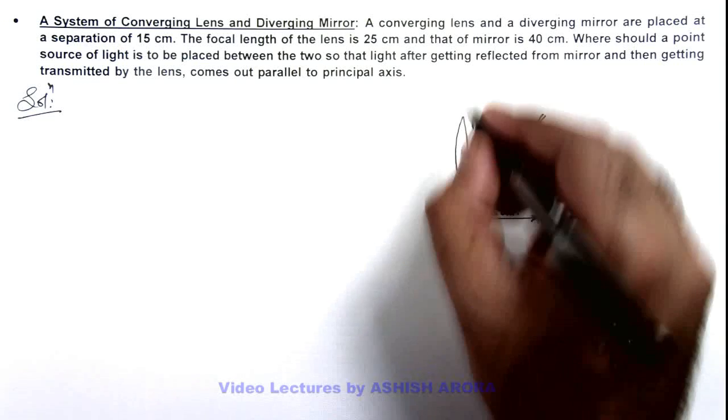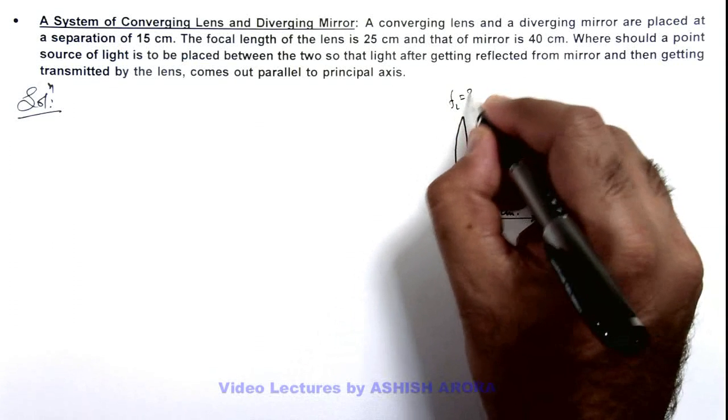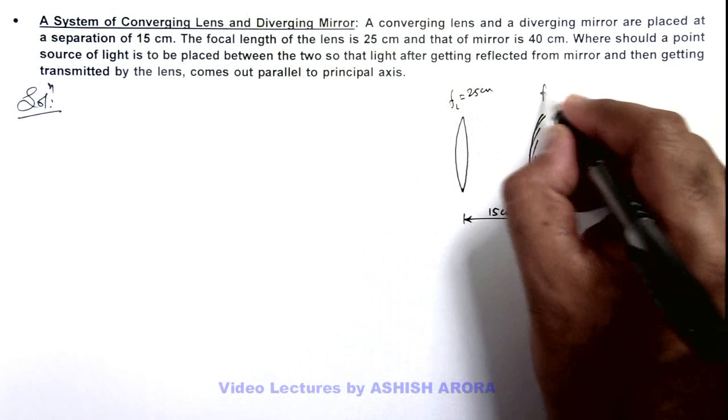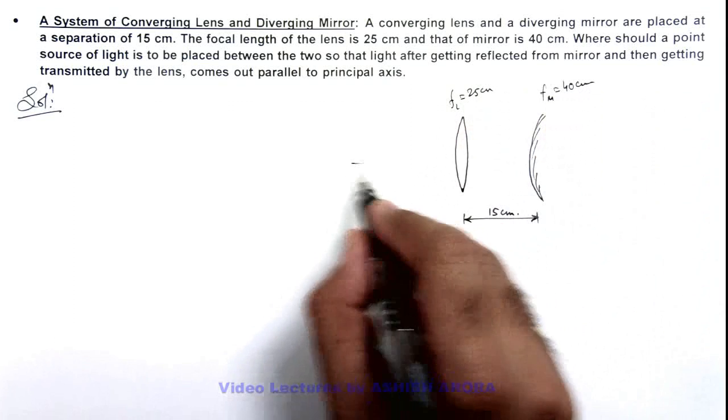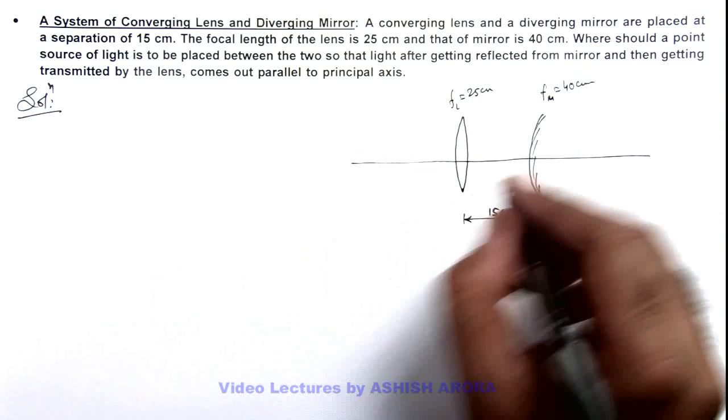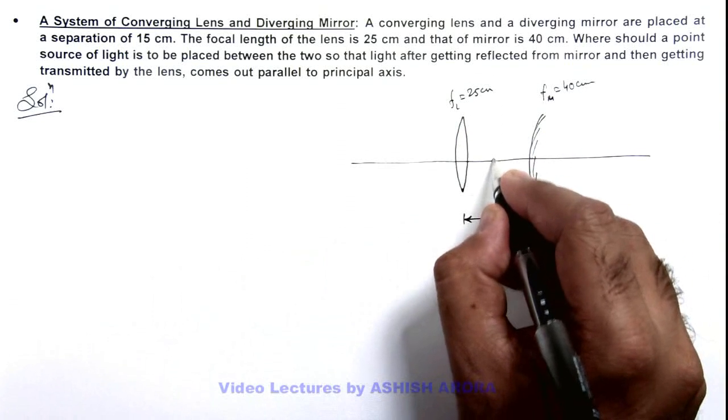The focal length of this lens is 25 centimeters and that of mirror is 40 centimeters. And we are required to find on this principal axis where we need to place an object.